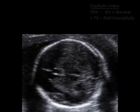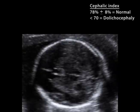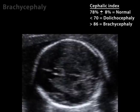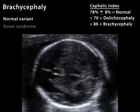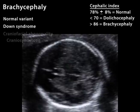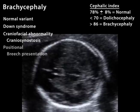A cephalic index above the normal range indicates brachycephaly, an unusually rounded head. Brachycephaly may be a normal variant. It is also common with Down syndrome and it may occur secondary to a craniofacial abnormality or may be positional.